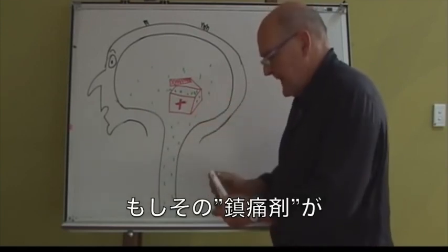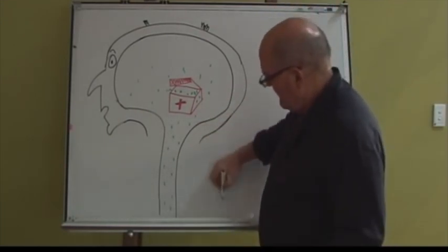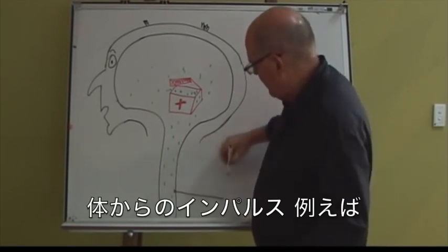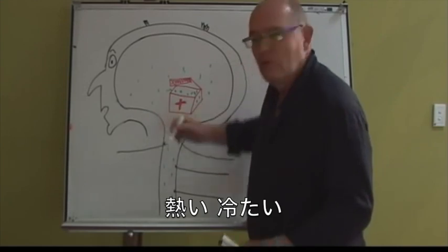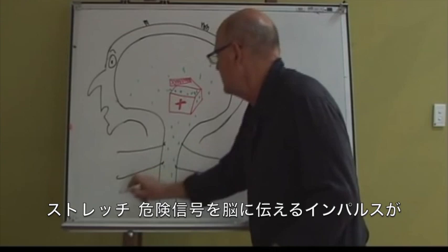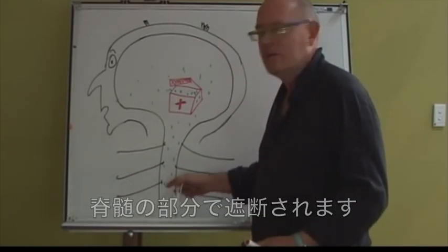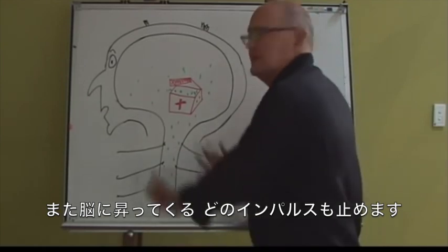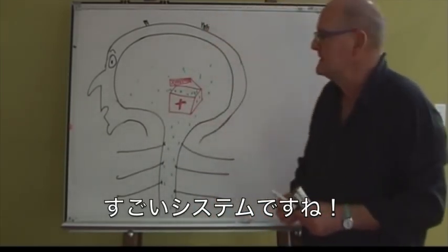If these painkillers are trickling down into the spinal cord, then impulses coming in from the body telling your brain about warmth, cold, stretch, danger can be stopped at the spinal cord. It can stop any impulses coming up. Now, that's a great system.